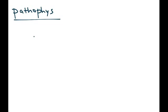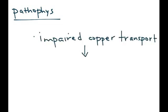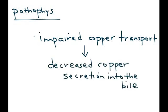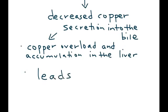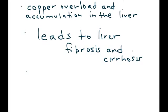What exactly is happening in Wilson disease? It is really a problem of impaired transport of copper. As a result, the copper is not able to go into the bile, and this decreased copper secretion into the bile results in copper accumulating in the liver.